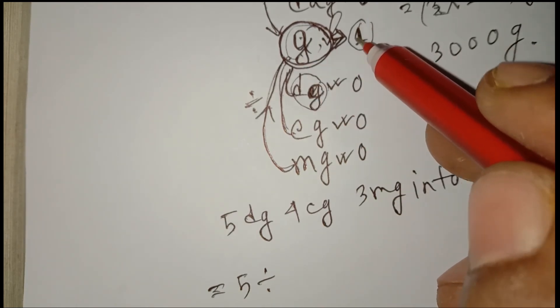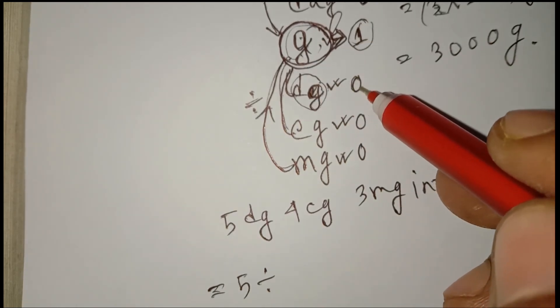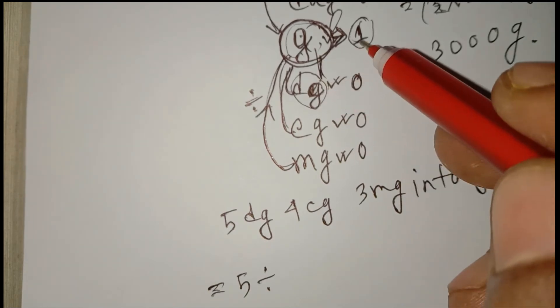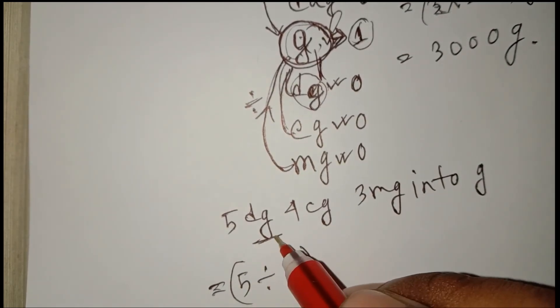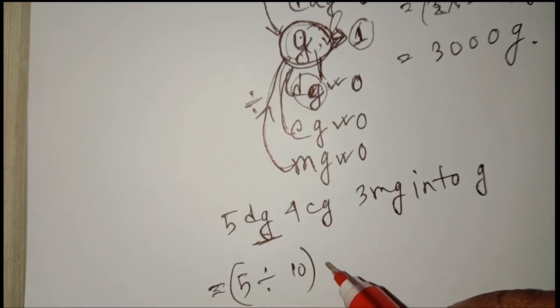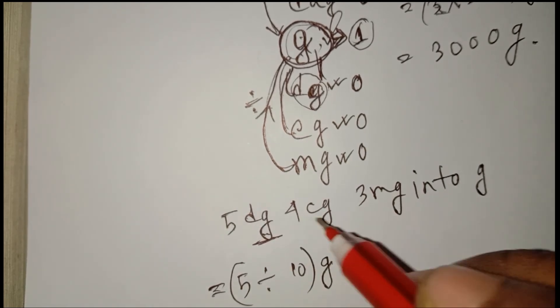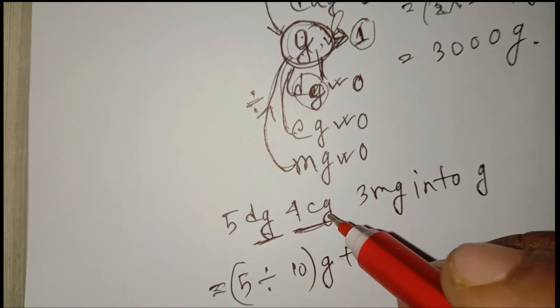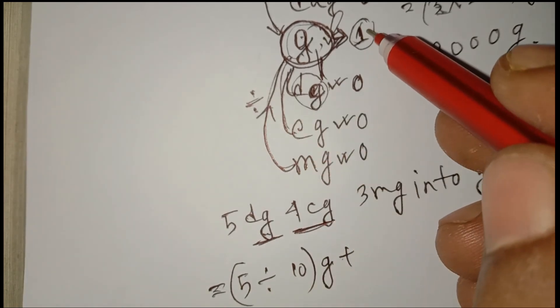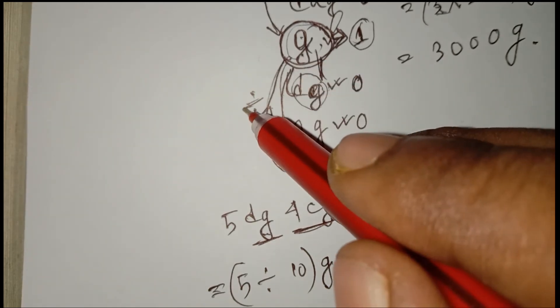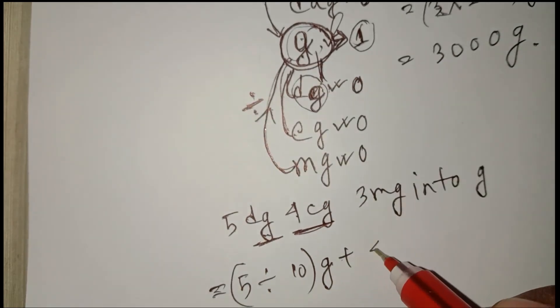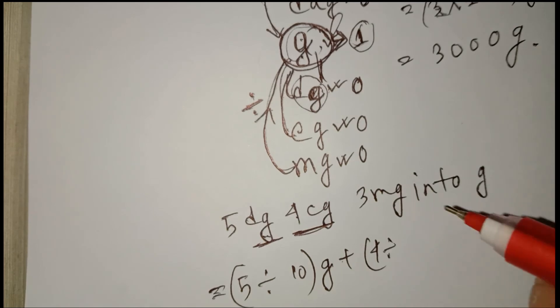5 dg: 1 gram is 1-0, so difference is 10. Divide. Decigram transferred into gram. Plus 4 cg—that means centigram. Centigram is less than gram, so we divide. 4 divided by 100.